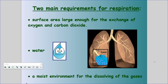The two main requirements for respiration are the following: you need to have large surface area and water for a moist environment. Water and a moist environment are really one in the same. When we're talking about breathing, your lungs actually have massive amounts of surface area.